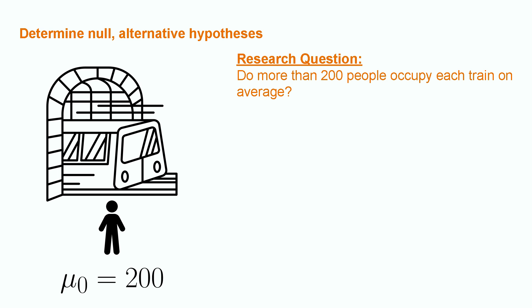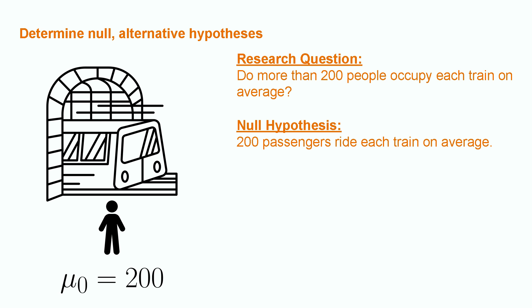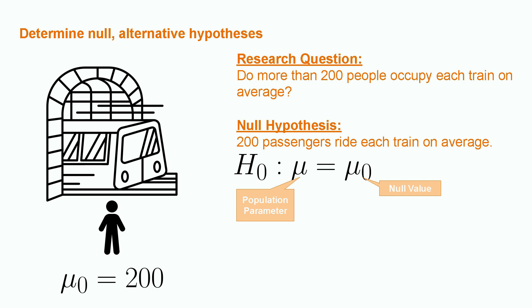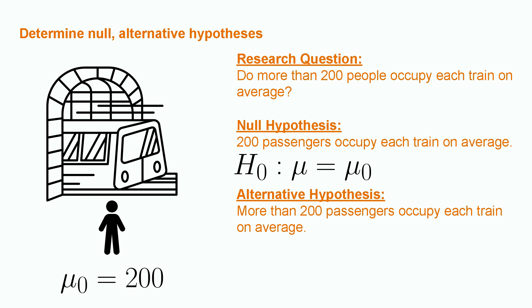In our first step, we have to determine our null and alternative hypotheses based on a research question. Recall from our setup that the critical value is 200 passengers, giving us a mu0 of 200. Our general research question is whether more than 200 people on average ride each train currently. This would make our null hypothesis that the population average for ridership is 200. Mathematically, this is written as H0: mu equals mu0. Essentially, we are stating the null hypothesis that the population parameter for average ridership is equal to the critical value of 200. Since we are most concerned with overcrowding, our alternative hypothesis is that more than 200 passengers occupy each train on average. Mathematically, this is written as HA: mu is greater than mu0.